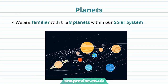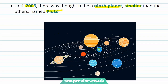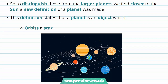We also need a definition for what a planet is. We're familiar with the eight planets within our solar system, all orbiting around the Sun. Until around 2006, there was thought to be a ninth planet — Pluto — further out than Neptune. However, when we were able to look further into the solar system, we found more bodies of a similar size to Pluto orbiting the Sun. In order to distinguish these bodies from the larger planets closer to the Sun, a new definition of a planet was needed.